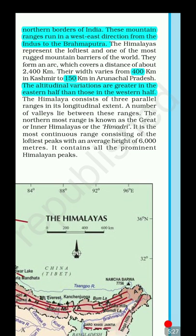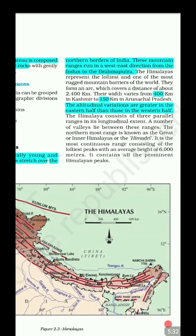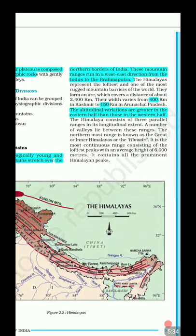Attitudinal variation is greater in the eastern Himalayas than in the western Himalayas — in the east, you might have peaks ranging from 6,000 m to 8,000 m and then down to 1,500 m within the same range. There are a number of valleys lying between the ranges. The northernmost range is known as the Himadri.